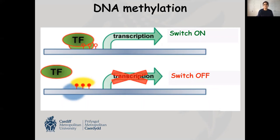The one epigenetic change that has been well studied with diet interaction is DNA methylation. Our DNA can be methylated at certain points. Going back to the promoter region where transcription factors come and bind — empty lollipops indicate that DNA is not methylated. If DNA is not methylated in promoter regions, transcription factors can come and bind and switch on gene expression. But if within the promoter region DNA is methylated — the red lollipops indicate methylated DNA — this will stop the transcription factor from coming and binding to the promoter region, and if the transcription factor can't bind, the gene will be switched off.